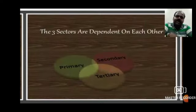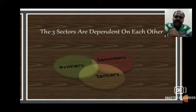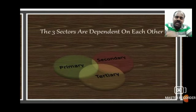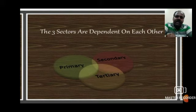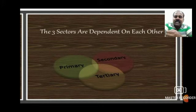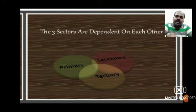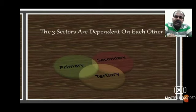After studying these three sectors — primary sector, secondary sector, and tertiary sector — we need to see that the three sectors are depending on each other. That means there is interdependence of sectors. We need to understand how the primary sector depends on the secondary sector, how the secondary sector depends on the other two sectors, and that they are interdependent on each other.